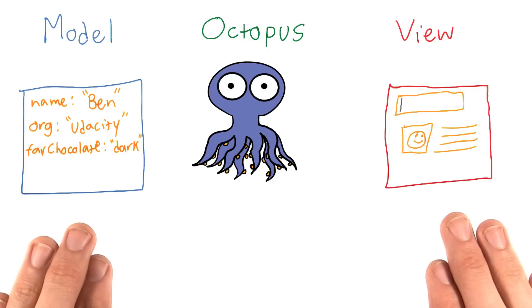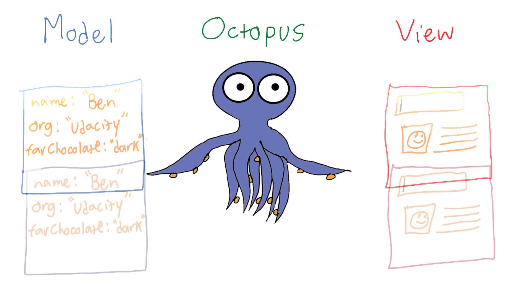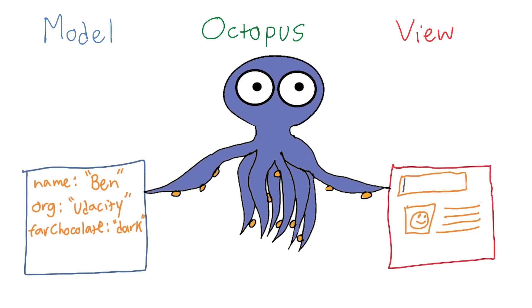Now, the model and the view are connected specifically by our octopus. Our octopus is what provides the separation of concerns that we so desperately need when we're building applications. You can think of the octopus as the thing that holds things together, but also keeps them separate enough to allow changes in individual pieces without upsetting the rest.